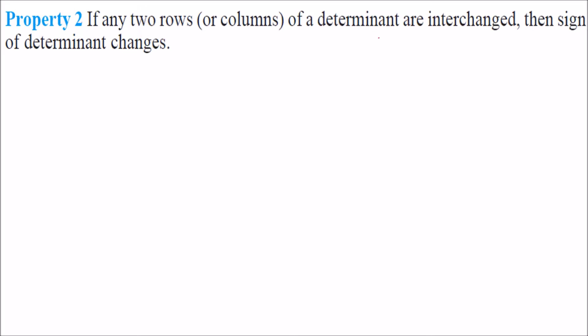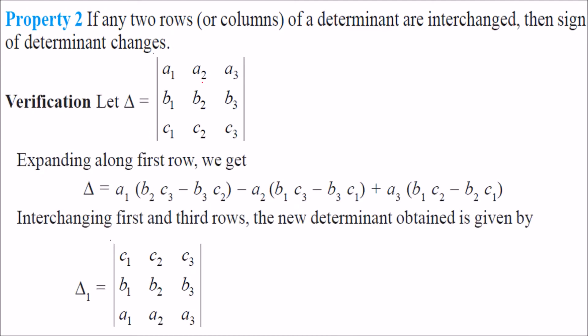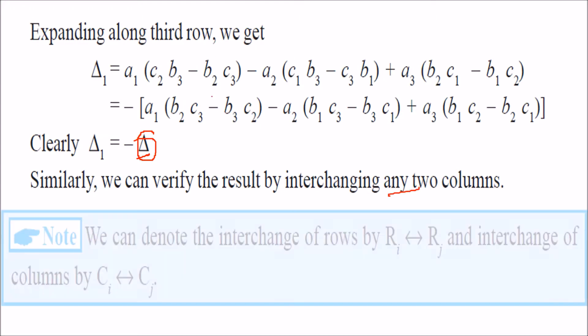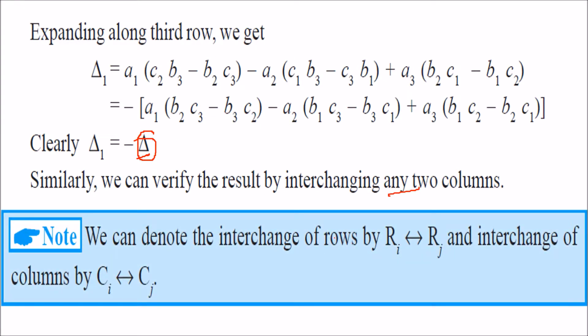Property 2: if any two rows or columns of a determinant are interchanged, then the sign of the determinant changes. So if we interchange, say, the third row to the first row position, when we solve it, it is equivalent to minus of the determinant of the previous one. We can also verify the result by changing any two columns. We denote the interchange of rows by Ri to Rj, or Ci to Cj.